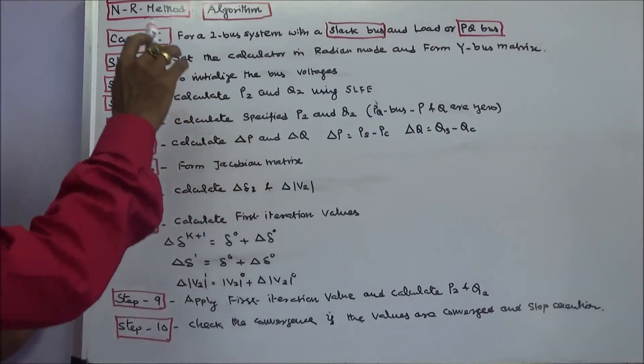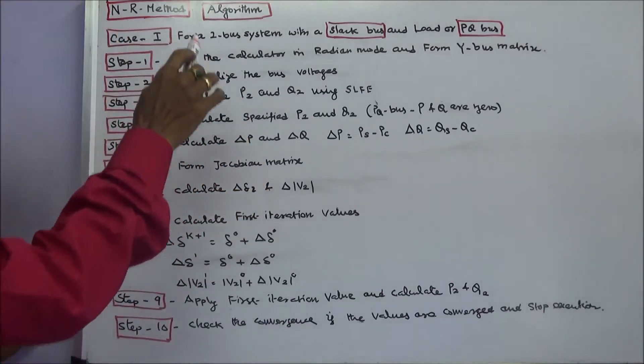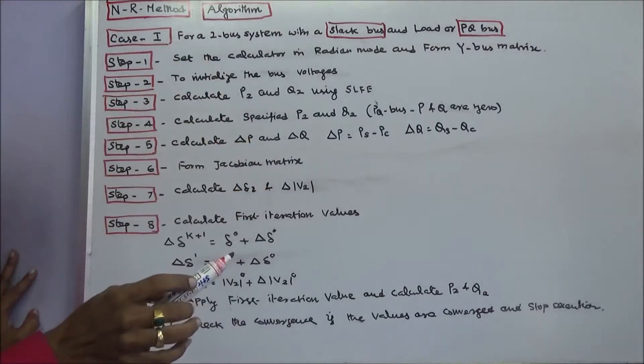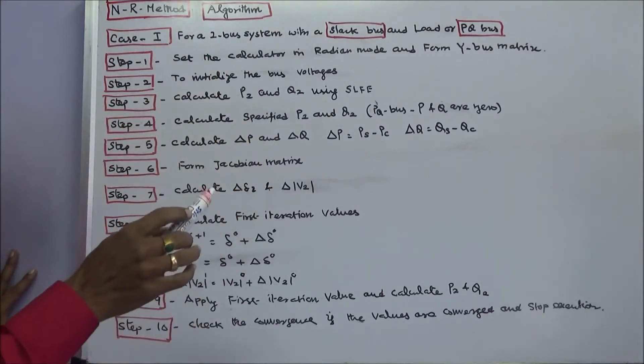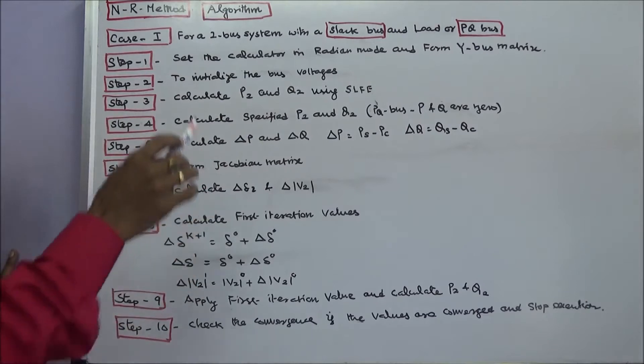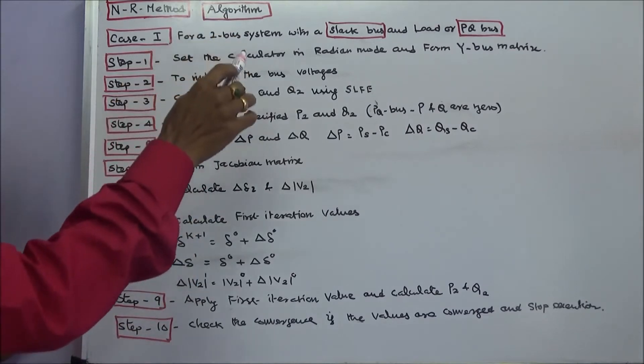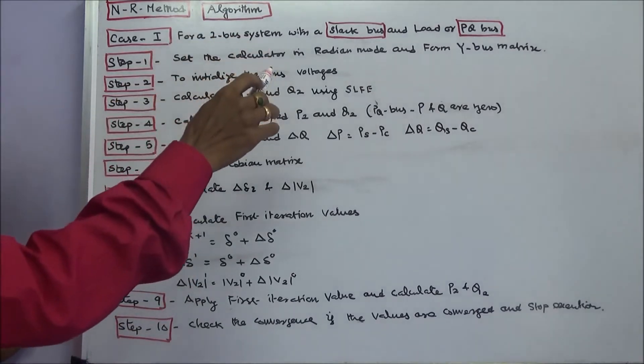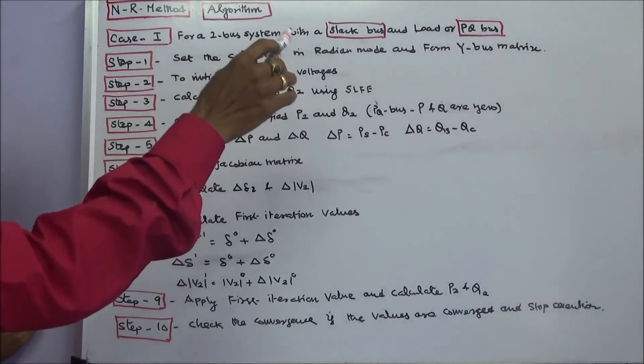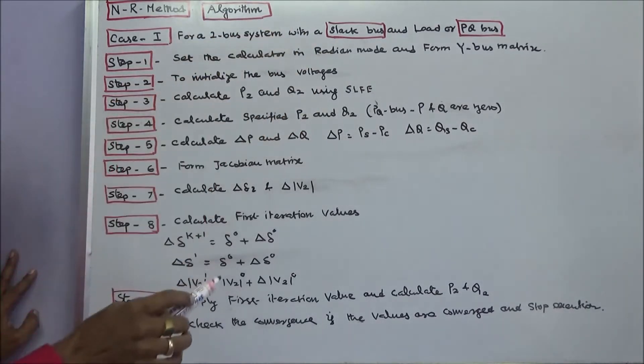This class we discuss about the Newton-Raphson method algorithm. Case 1: for a 2-bus system with a slack bus and a load bus, or a PQ bus.